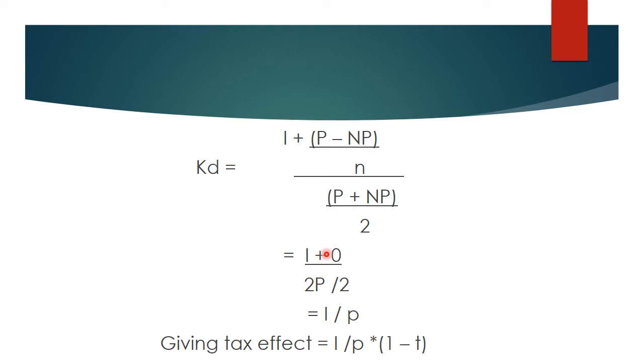So, it becomes I plus 0 upon... Now, since P and NP are same, so we can write it as P plus P that becomes 2P upon 2. So, it becomes I upon, again this 2, 2 gets cut. So, it is I upon P. That is your cost of debt. That becomes the formula of your cost of debt. And again, we need to give the tax effect as well. So, after giving tax effect, it becomes I upon P multiplied by (1 minus the tax rate).